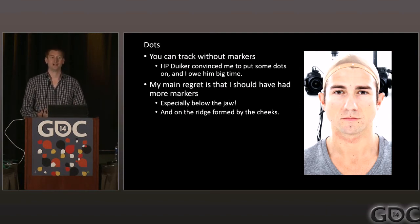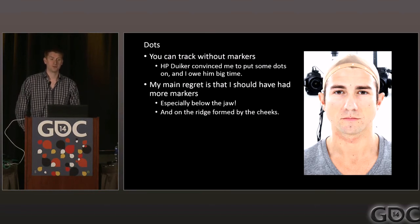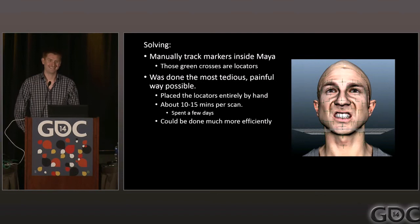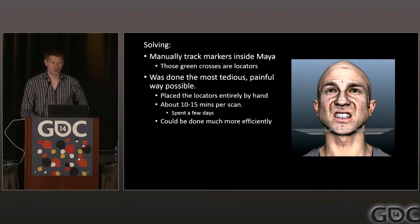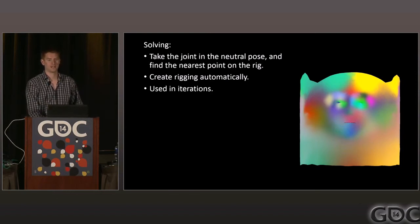If you have markers you don't want, you can clean them up easily — worst case, use a healing brush in Photoshop. If you don't have markers and need them, you are screwed. So I highly recommend using markers and cleaning them. The way I actually tracked these markers was the worst way possible — I just sat down, opened Maya, and placed the locators manually. It took a day or two. I didn't feel like dealing with the whole pipeline thing with camera distortion coefficients and Y-up differences.